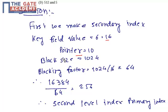Block size is 2^10 = 1,024 bytes. Blocking factor is 1,024 divided by 16, which equals 64. Dividing total records 16,384 by 64 gives 256 first-level blocks.